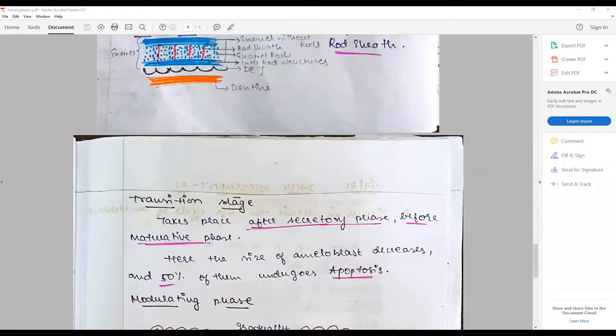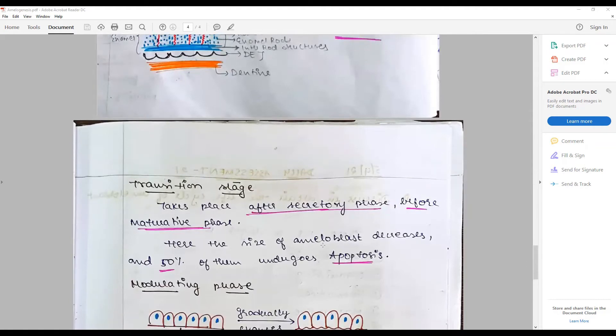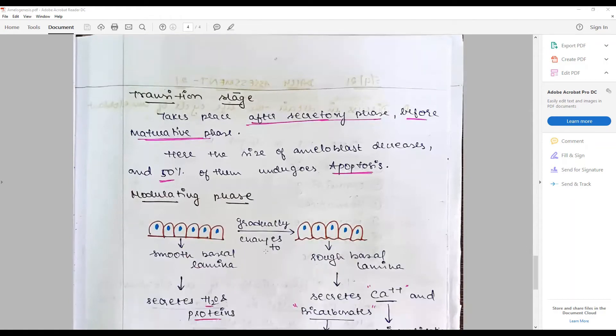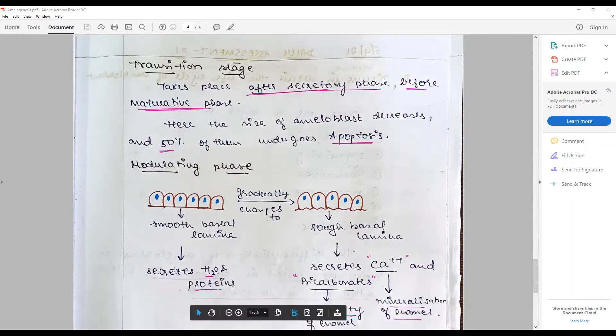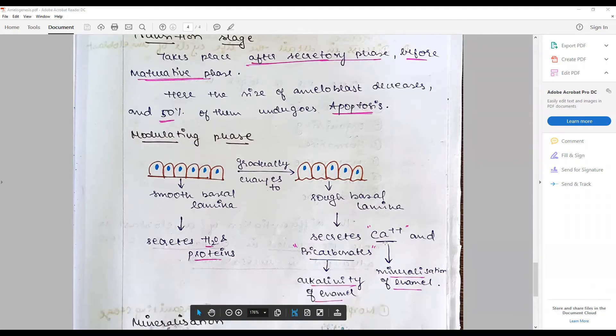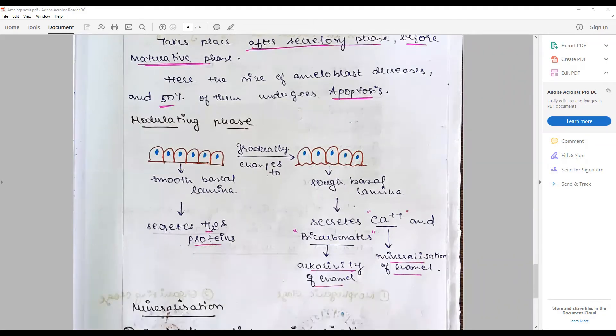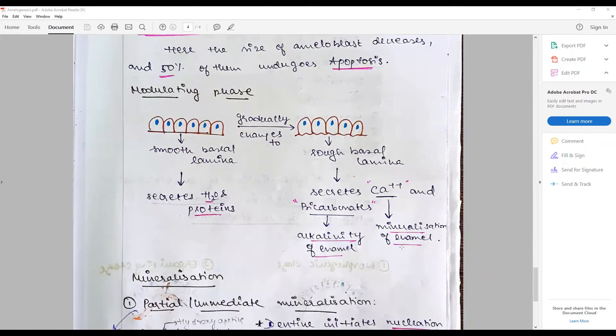Then talk briefly about the transitionary stage and secretary phase before the maturity phase. This is where the size of ameloblast decreases, undergoes apoptosis in the modulating phase, and the smooth end of the basal lamina gradually changes into rough. This smooth basal lamina is responsible for secretion of water and proteins, whereas when it changes to rough basal lamina, it secretes calcium and bicarbonates. Bicarbonates are responsible for contributing to the alkalinity of enamel, whereas calcium contributes to mineralization of enamel.